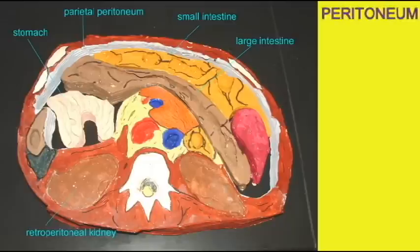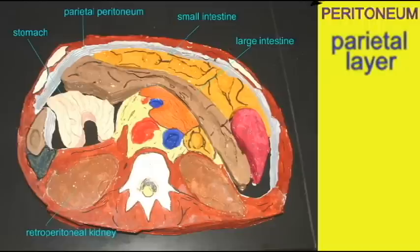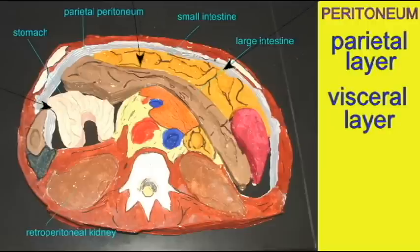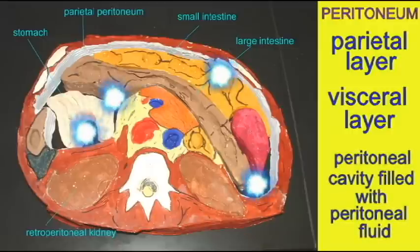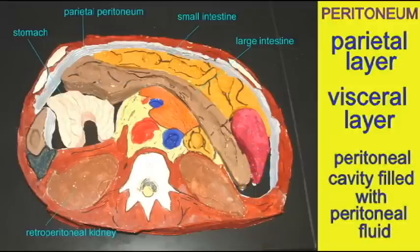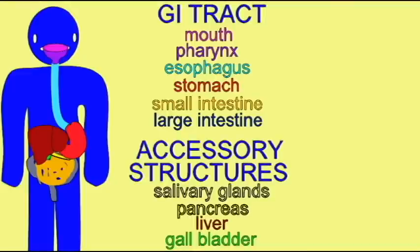The outermost layer of the GI tract is the serous membrane layer, or the serosa layer, known as the peritoneum. The visceral layer of the peritoneum lines the digestive organs, and the parietal layer of the peritoneum lines the abdominal pelvic cavity. Between the two, a lubricating fluid, known as peritoneal fluid, is secreted.